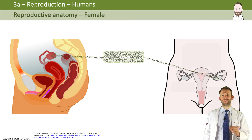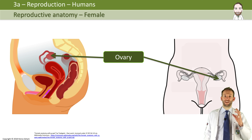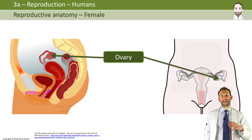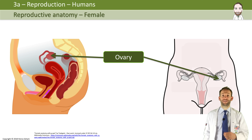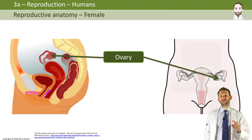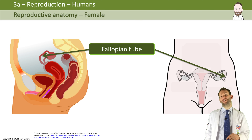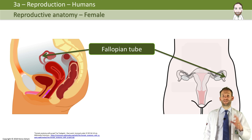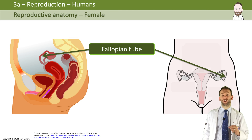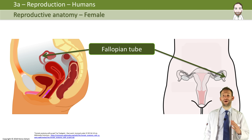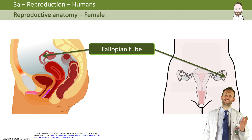The ovaries secrete the eggs — one every month — and they also secrete certain sex hormones like estrogen and progesterone. The fallopian tube is where the egg travels down to get to the uterus, so it connects the ovary to the uterus, and fertilization actually occurs in the fallopian tube. The sperm will swim all the way up the vagina, through the cervix, through the uterus, and into the fallopian tube to meet the egg.